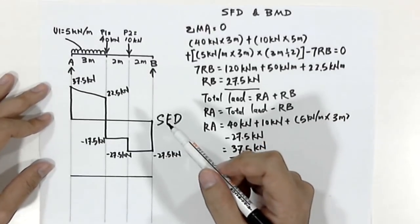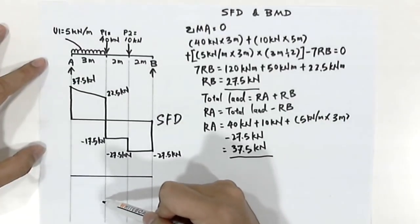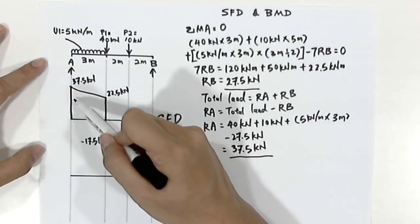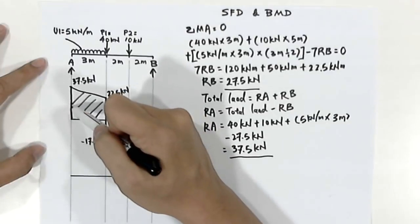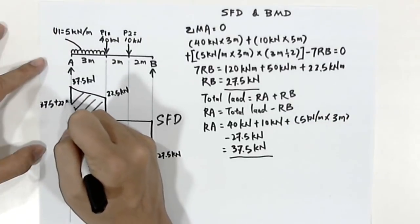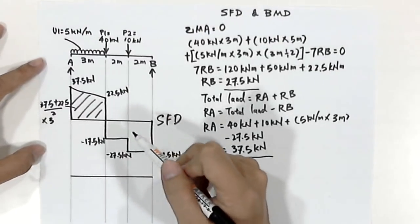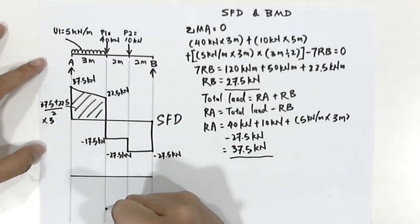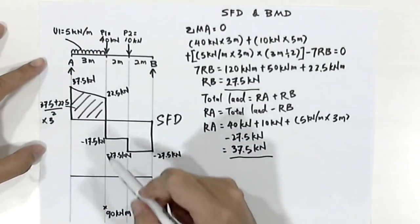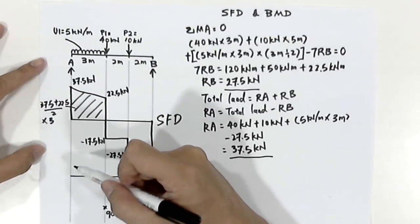The next step is to do the bending moment diagram. The value of the bending moment is the same as the area in our shear force diagram. So let us calculate the area for the first zone, which is (37.5 plus 22.5) divided by 2, then times the span of 3 meters. The answer we'll get will be 90 kilonewton meters. Since the shear force line here is a linear line, in the bending moment diagram we'll draw a curved line.